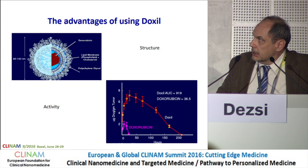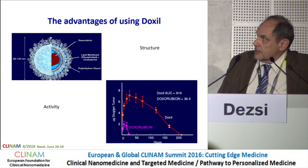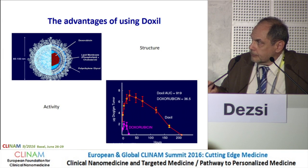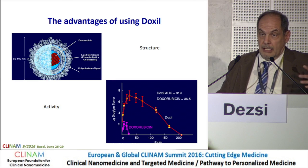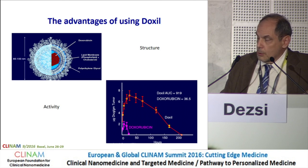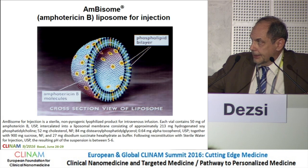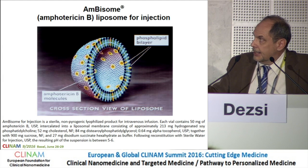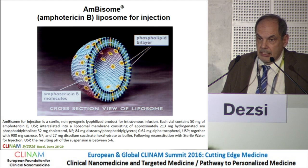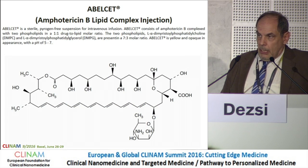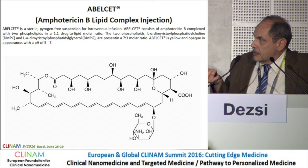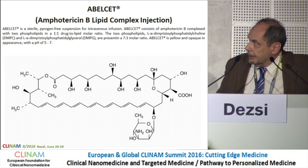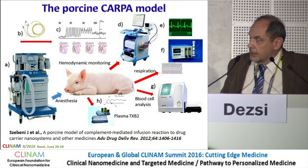Regarding Doxil, I want to emphasize that its main advantage is that it not only concentrates in cancer tissue at a high level, but also stays for a long time in the circulation, thanks to its liposomal coat. AmBisome is a double phospholipid bilayer liposome where the active ingredient is not inside in solution but incorporated into the liposome wall. In Abelcet, amphotericin B is coupled to two long chains of phospholipids.